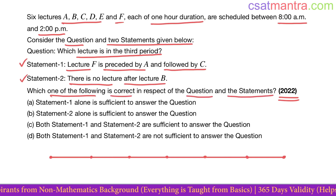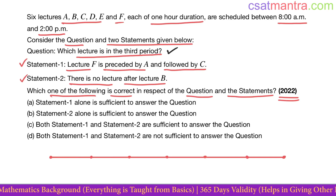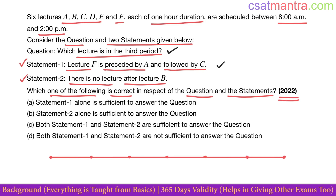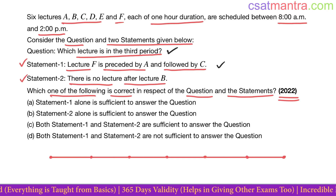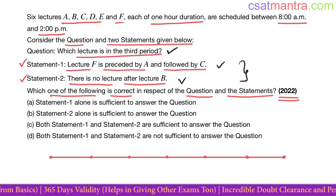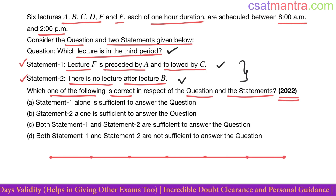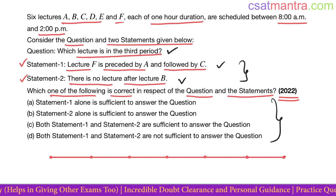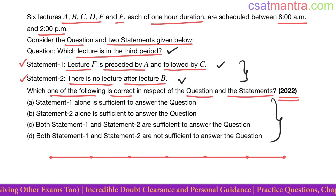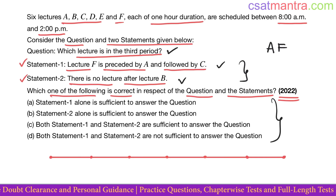We have to answer this question with certainty using Statement 1 alone, Statement 2 alone, both combined, or determine if both are not sufficient. Looking at Statement 1: F is preceded by A — 'pre' means before — and followed by C, so A, F, C are together.